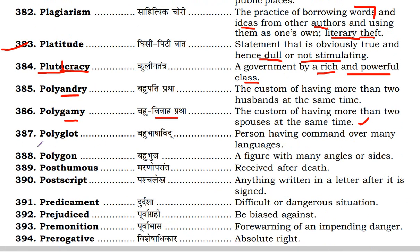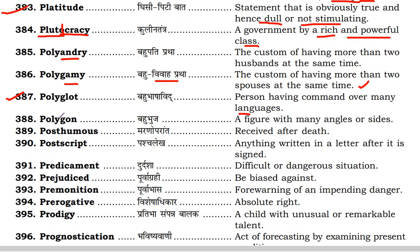Next is polyglot. Polyglot is a person having command over many languages — we call such a person a polyglot. Next is polygon — a plane figure with many angles and sides.